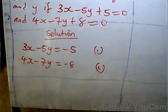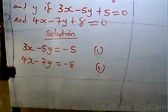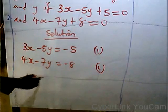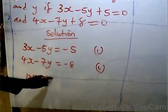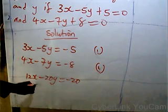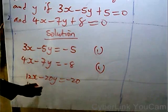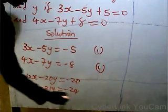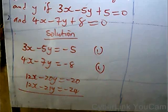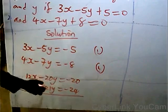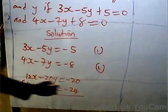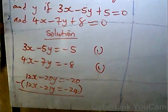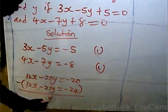If I multiply equation 1 by 4, I get 12x minus 20y equals minus 20. If I multiply equation 2 by 3, I get 12x minus 21y equals minus 24. If I subtract, 12x minus 12x gives 0. Minus 20y minus minus 21y gives y. Minus 20 minus minus 24 gives plus 4. So y is equal to 4.